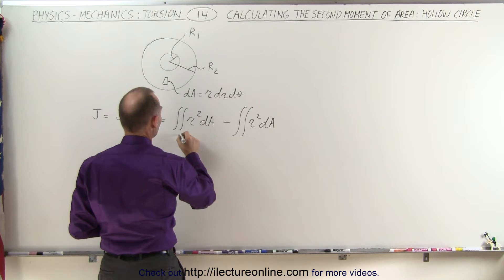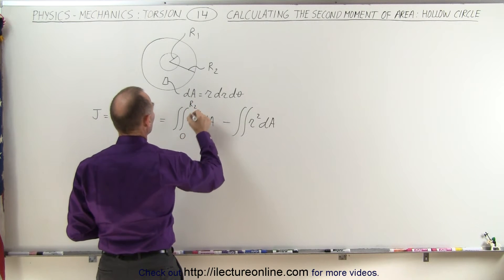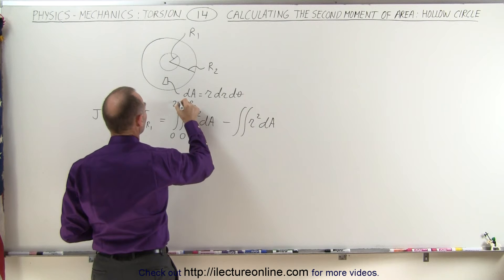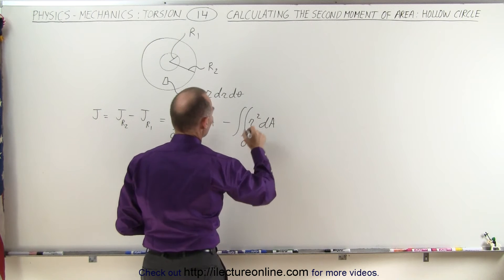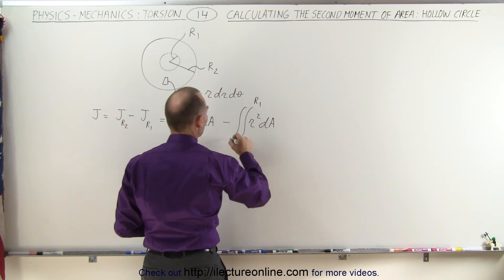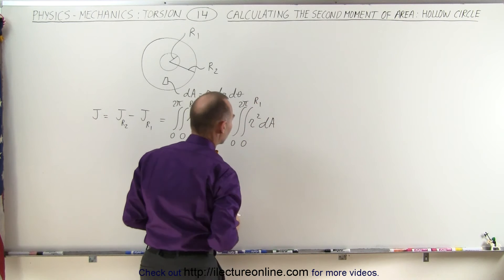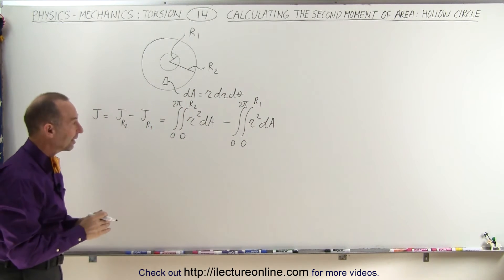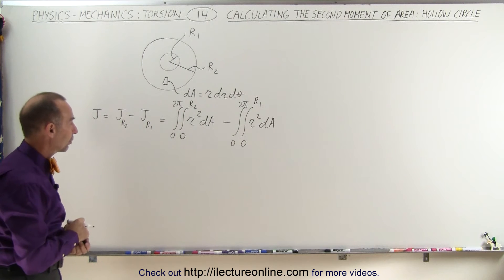For the R, that would be from 0 to R2 and from 0 to 2 pi for the angle, and here that would be from 0 to R1 and 0 to 2 pi for the angle. So they look exactly the same, the only difference is that they have different limits of integration.